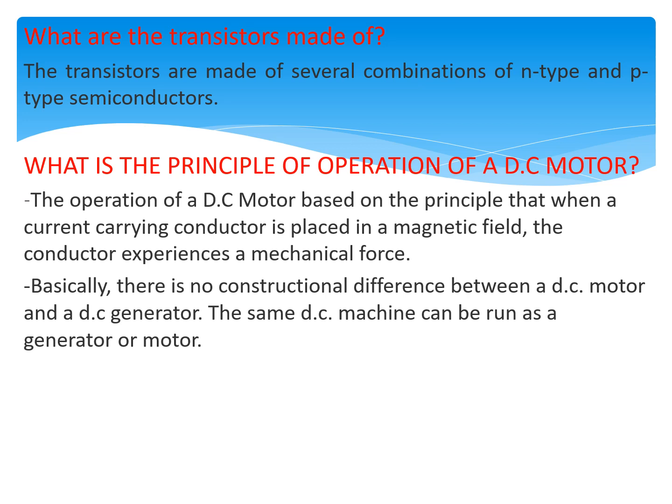What are transistors made of? Transistors are made of several combinations of N-type and P-type semiconductors.